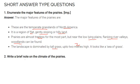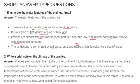Write a brief note on the climate of the prairies. Prairies are located in the middle of the continent, that is North America. Therefore, we find a continental type of climate here, characterized by extreme temperatures — summer at 20 degrees centigrade and winter at minus 20 degrees centigrade, as recorded in Winnipeg in Canada. In winter, a thick blanket of snow covers this region, and the annual rainfall is moderate. A local wind called Chinook blows here.